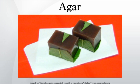Agar, or agar-agar, is a gelatinous substance obtained from algae, discovered in the late 1650s or early 1660s by Minoia Tara Zemin in Japan, where it is called Canton. Agar is derived from the polysaccharide agarose, which forms the supporting structure in the cell walls of certain species of algae and is released on boiling. These algae are known as agarophytes and belong to the rhodophyta phylum.